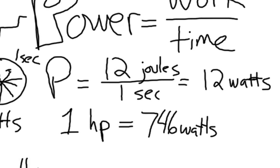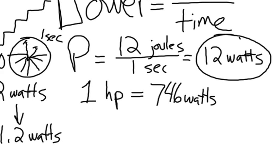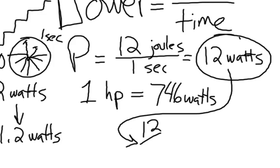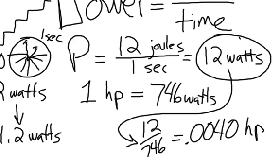And so let's go back to that problem. If we're able to move a can of coke to the top of the stairs in one second, we say that that's 12 watts. So if we convert that to horsepower, then we are a 0.016 horsepower machine. So that's not a very powerful machine.